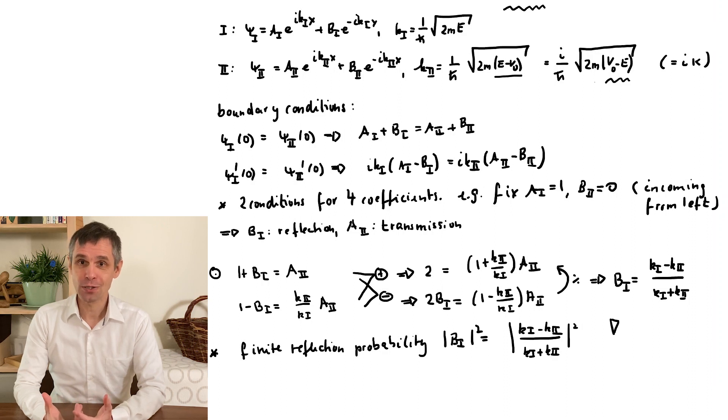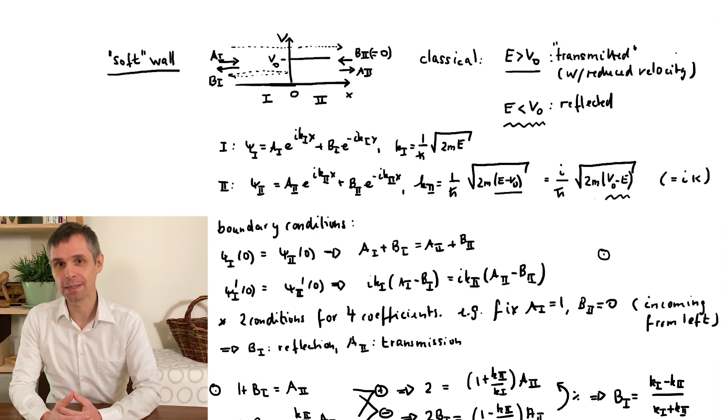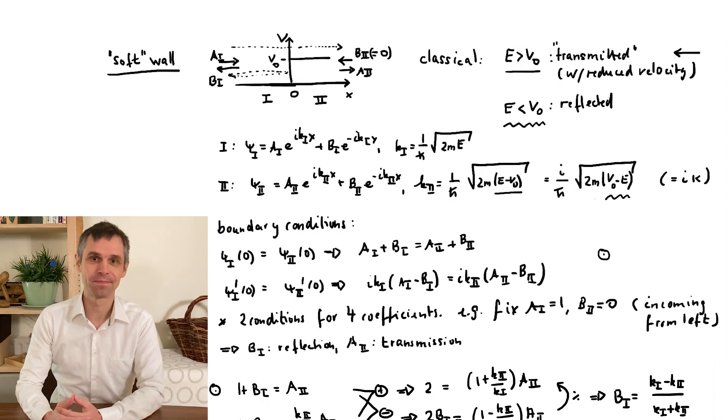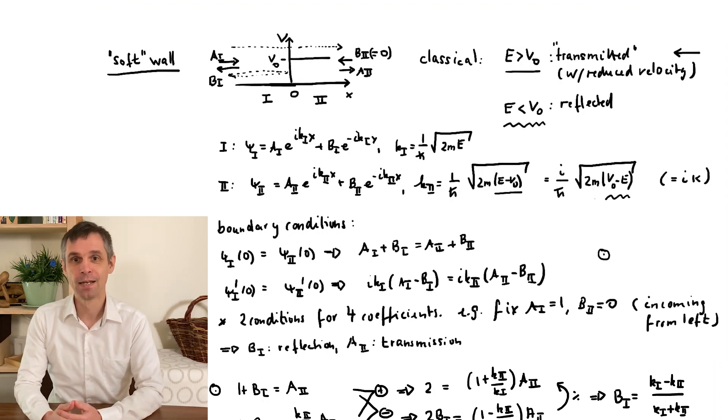It is generally less than 1, so there is also a finite chance of transmission, but we will come back to this a little bit later. In any case, this is very different from the classical case where the particle is always transmitted.